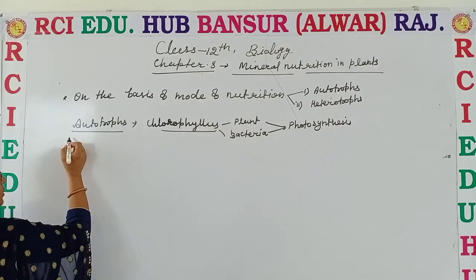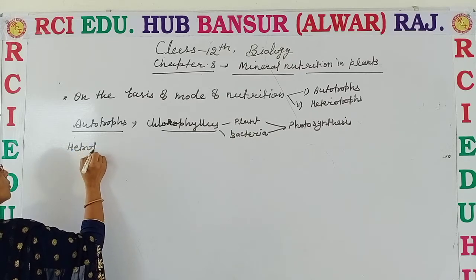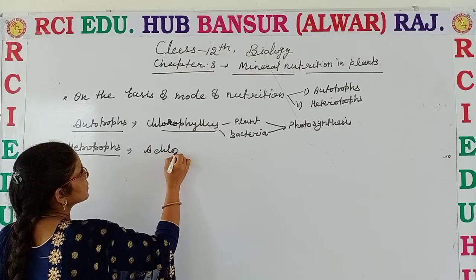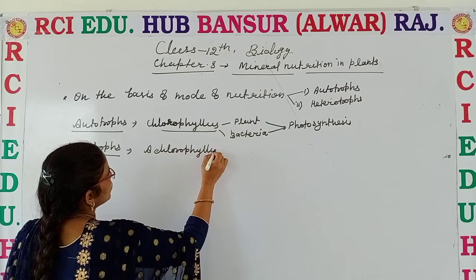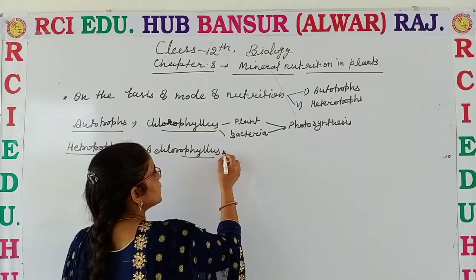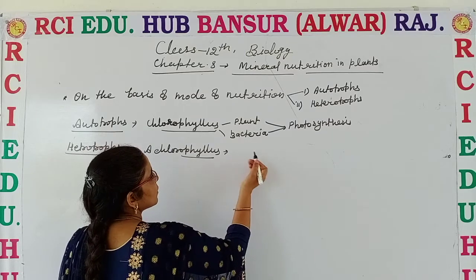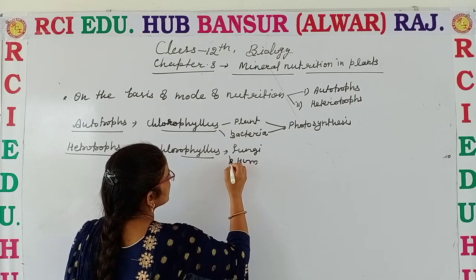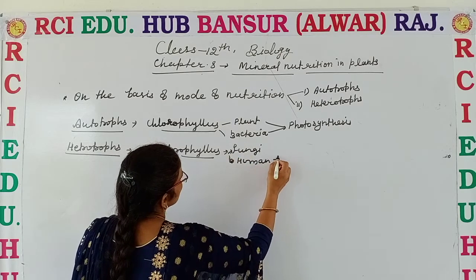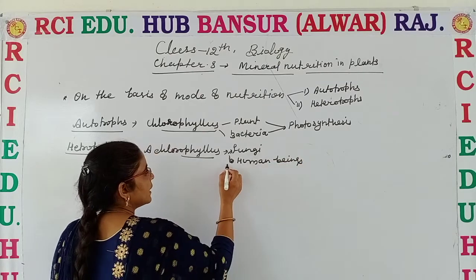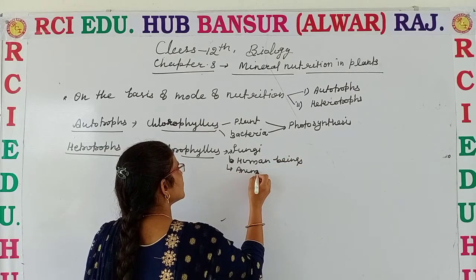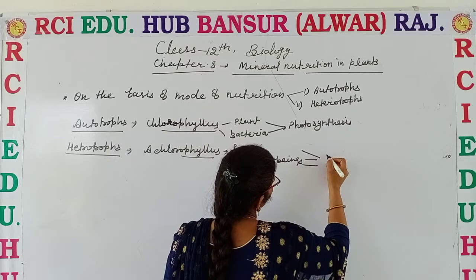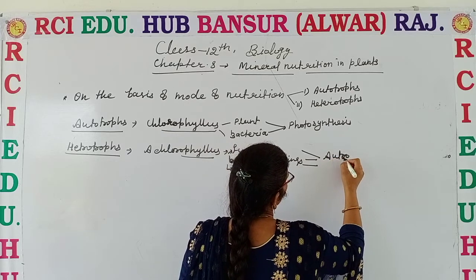If we discuss the other mode of nutrition — heterotrophs — these are organisms which are achlorophyllous. As they do not have the chlorophyll pigment, they are not able to prepare their own food. These include fungi, human beings, and other animals. They are not able to do photosynthesis, so they are dependent on autotrophs, directly or indirectly.